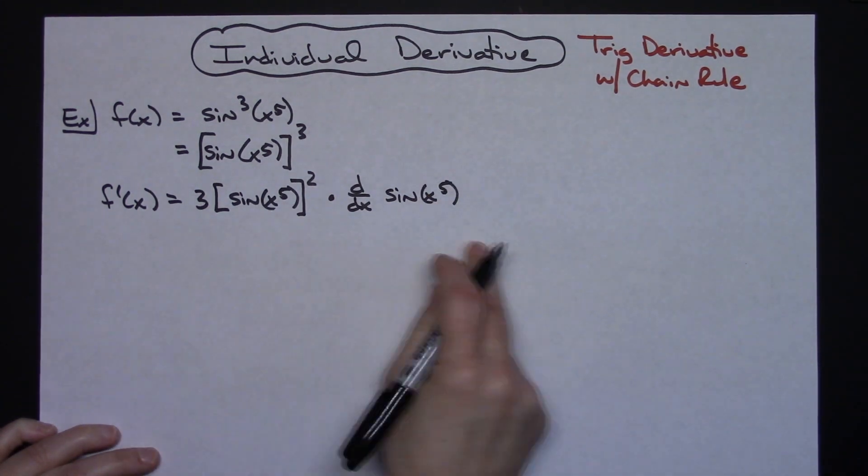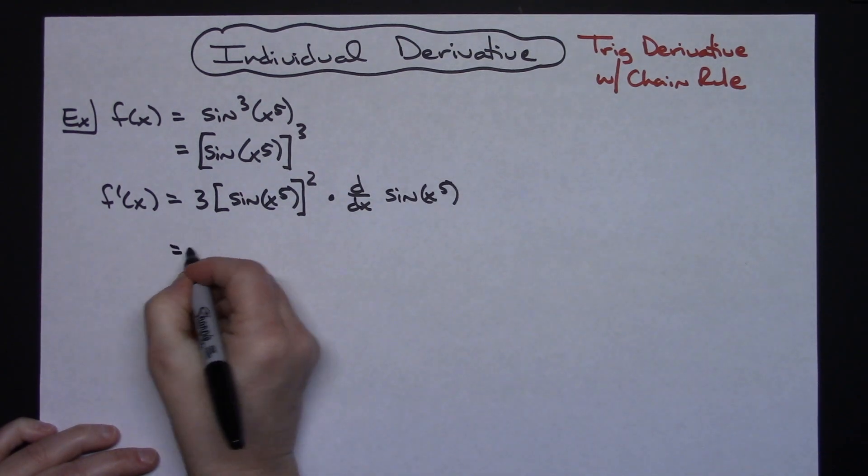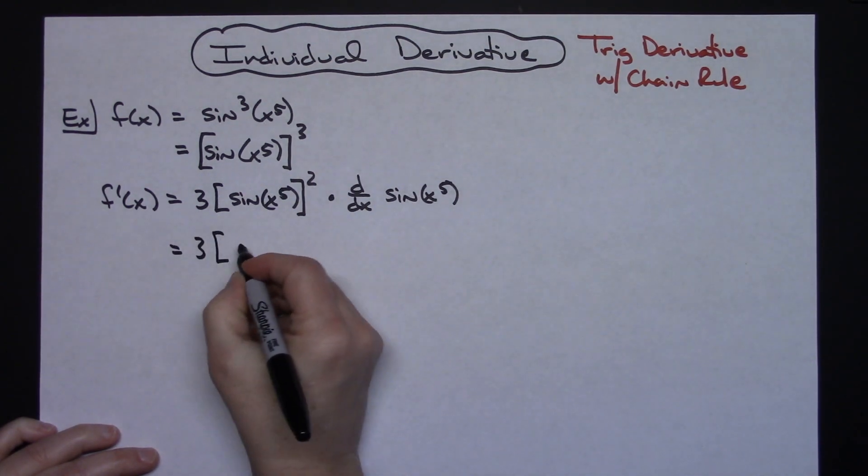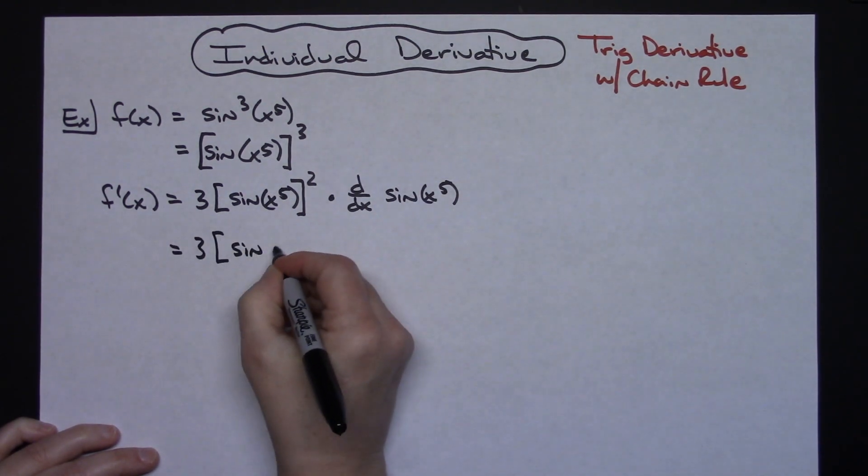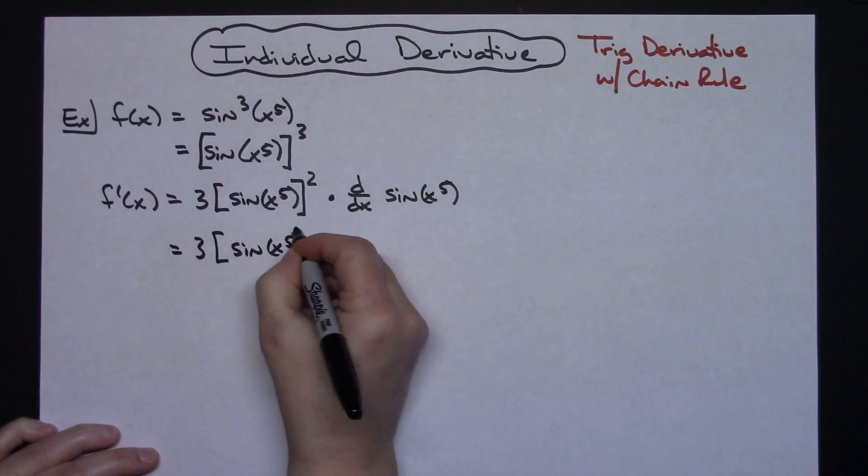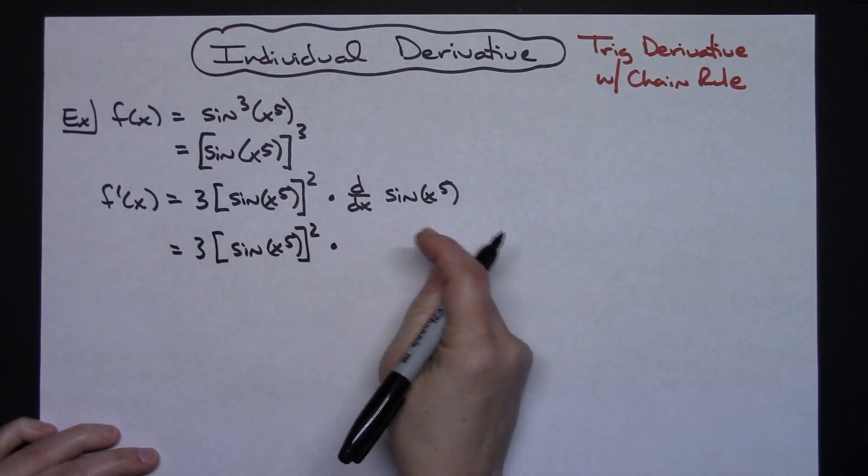Now in my next line this first part is going to remain the same. So I'm going to have three times the sine of x to the fifth and then to the second power. All stays the same. Not doing anything there.